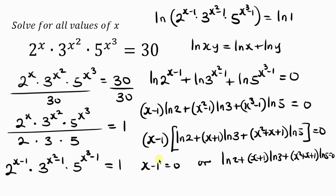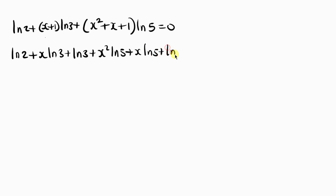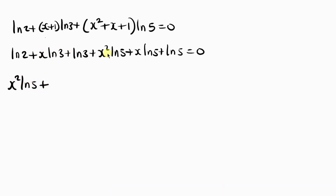From the first case, x−1 = 0, giving x = 1, which we found earlier. Now let's focus on the second case: ln 2 + (x+1)ln 3 + (x²+x+1)ln 5 = 0. Expanding the brackets: ln 2 + x·ln 3 + ln 3 + x²·ln 5 + x·ln 5 + ln 5 = 0. Writing the highest power first: x²·ln 5 + x(ln 3 + ln 5) + ...